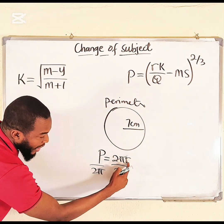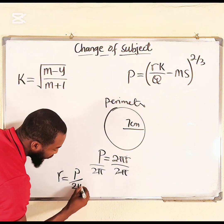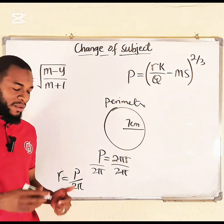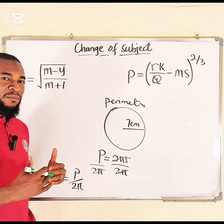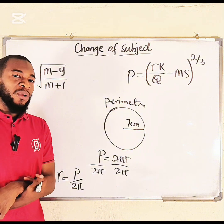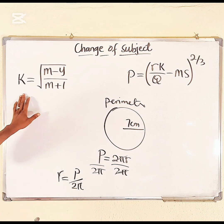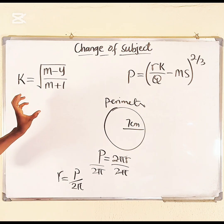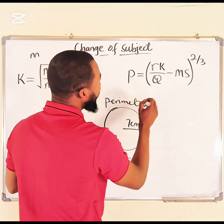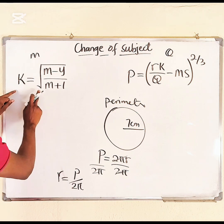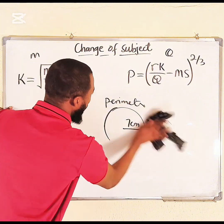The 2π cancels and we have only r remaining. Therefore r is equal to P divided by 2π, and hence r is now the subject. So the term or variable you are looking for that stands alone without anything attached to it is said to be the subject of that formula. Now let's choose variables m and q from our two equations to make each the subject.